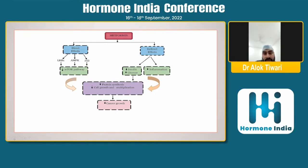Another effect of metformin is decreasing insulin levels. So insulin and glucose decrease, inflammation settles, the patient's obesity is corrected, and this results in a low inflammatory status and low hyperinsulinemia state, which decreases cancer growth.